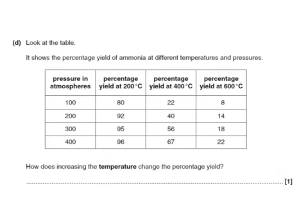And a final question. Look at the table. It shows the percentage yield of ammonia at different temperatures and pressures. How does increasing the temperature change the percentage yield? Well, if we look at changing the temperature, let's keep the pressure the same. So let's just look along one of these rows. So keeping the pressure at 400. If we increase the temperature from 200 to 400 to 600, we can see that the percentage yield is going down. It's decreasing.